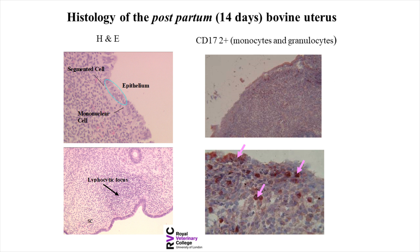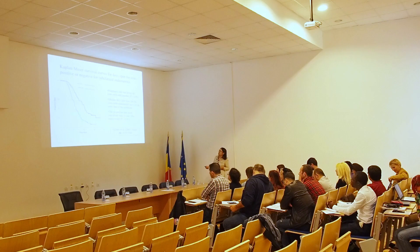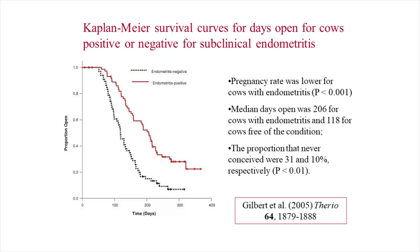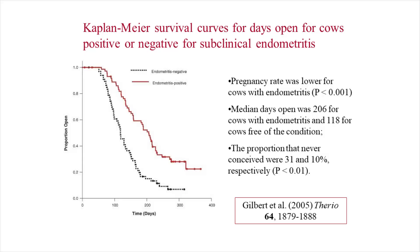A study from the US looking at time after calving to conception compared endometritis-negative and endometritis-positive cows. Pregnancy rate was significantly better in the negative group: median days open was 118 versus 206 days, 10% of the endometritis-negative group failed to conceive versus 31% of the endometritis-positive group. So having delayed repair to the endometrium means an additional 20% of animals are effectively lost due to uterine infection.